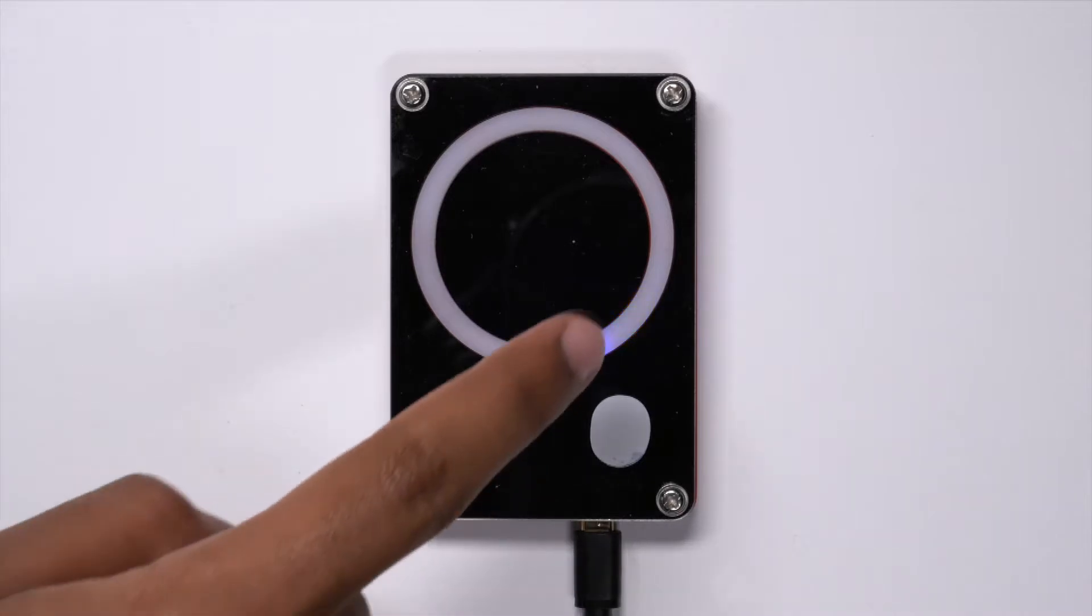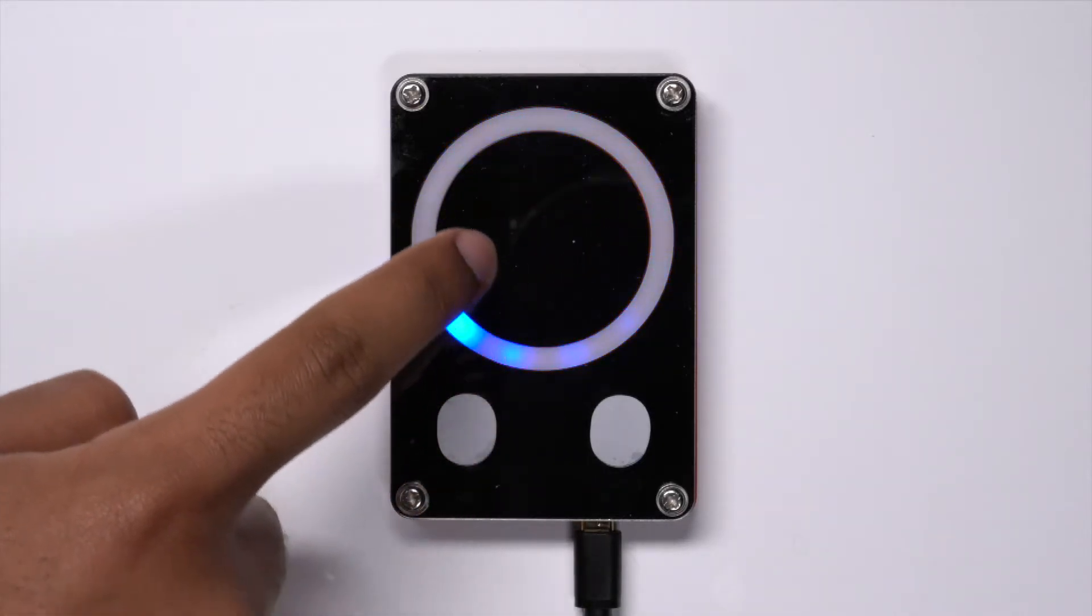The second is the wheel mode, where finger movement is chased by the light in both clockwise and counterclockwise movement.